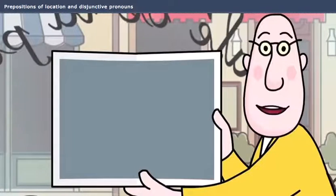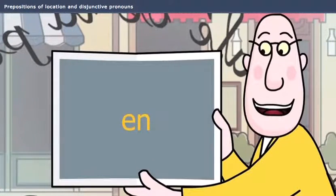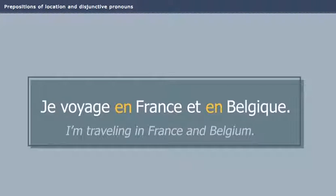The preposition used with a country varies. You'll learn more about that later, but for now, you can use en in many cases. Je voyage en France et en Belgique.